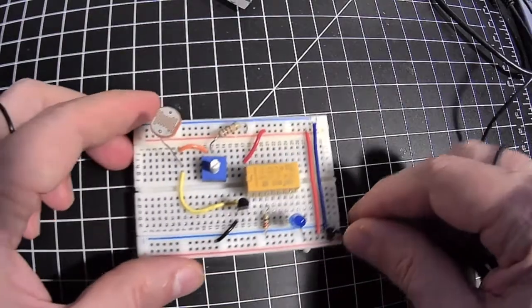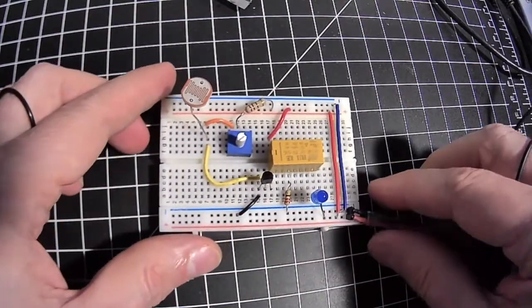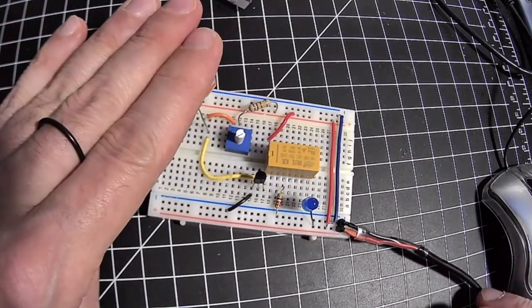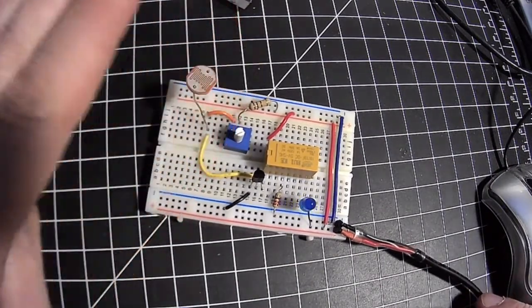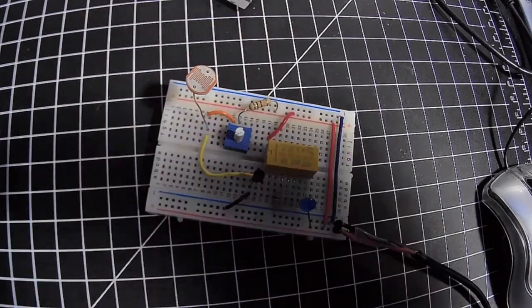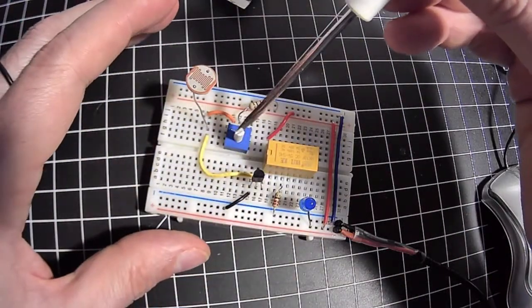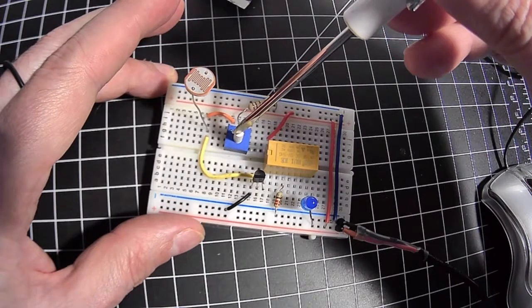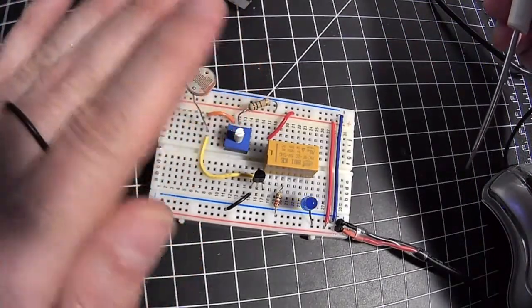And applying power and testing it, in fact, should work. You can make subtle adjustments with the pot to adjust the range to get greater or less sensitivity. Have fun playing with the circuit!